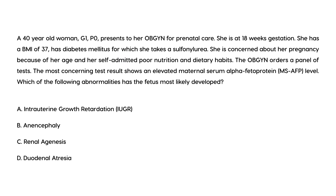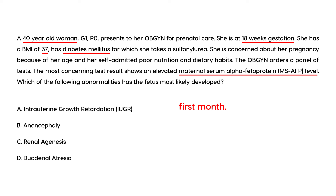Clinical vignette: A 40-year-old woman, G1P0, presents for prenatal care at 18 weeks gestation. She has a BMI of 37, diabetes mellitus treated with a sulfonylurea, and self-admitted poor nutrition. The OB-GYN orders tests and finds an elevated maternal serum alpha-fetoprotein. Neural tube defects can develop very early in pregnancy, even in the first month. If MS-AFP is elevated at 18 weeks, the fetus most likely has a neural tube defect — in this case, anencephaly.